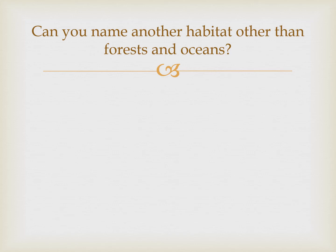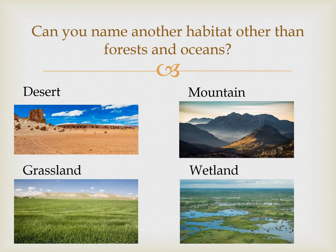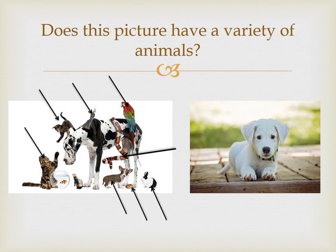Can you name another habitat other than forests and oceans? A lot of you guys got this right. The first one that comes to my head would be desert. Another one you could have used is mountain. There's also grassland and wetland — these are all habitats that animals and different creatures live in. Does the picture have a variety of animals? Yes — there's a cat, a bird, another bird, another cat, a snake, rabbit, turtle, dog. So there's a variety of animals. The picture on the right has just one animal, so no variety.